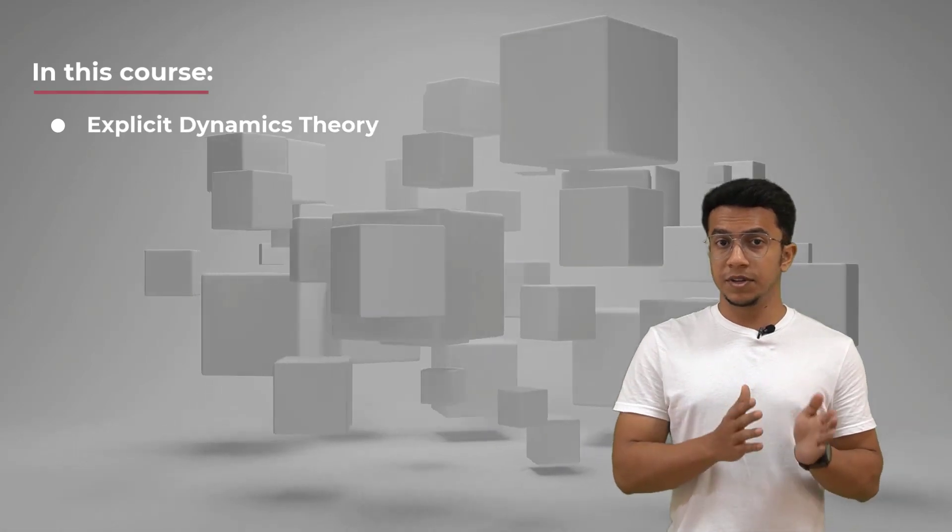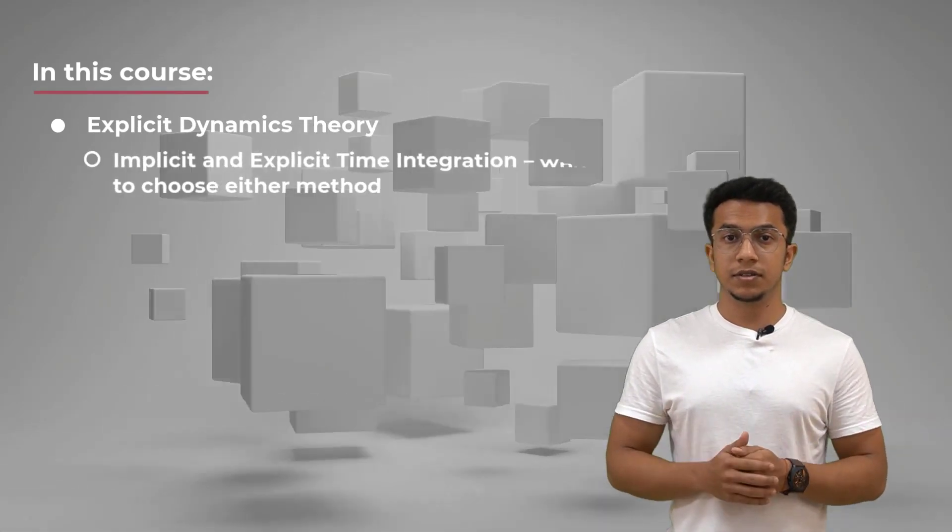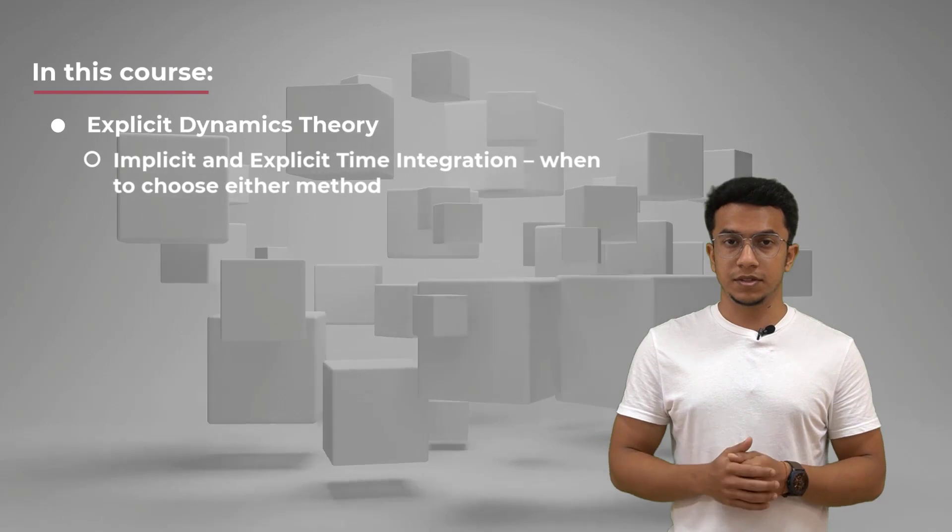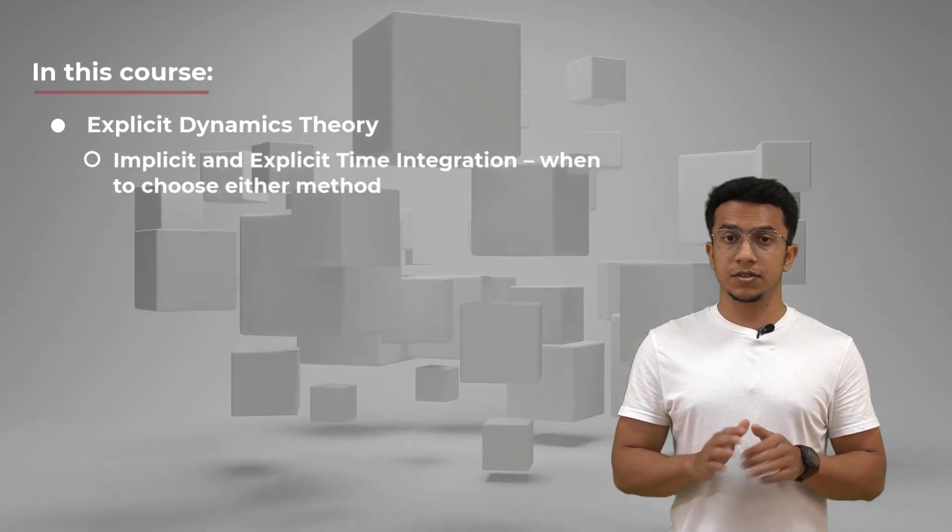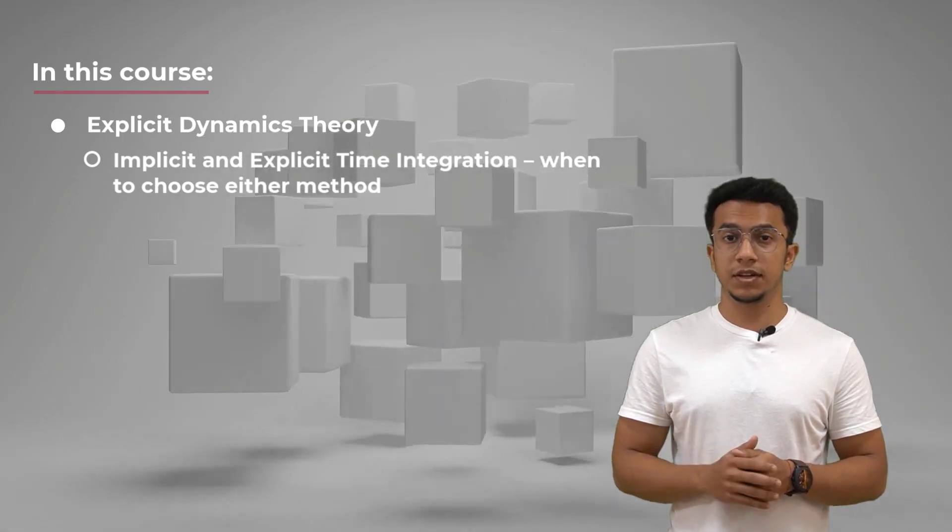In this course, we'll discuss the theory behind explicit dynamic simulations. We begin by discussing the difference between an implicit method and an explicit method, and when to use either of these methods. When using explicit method, we need to perform a few checks to ensure that the solution obtained is reasonably accurate.